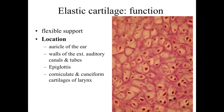Elastic cartilage is associated with more flexible support. The best example is the auricle of the ear — that outer portion. It has structure and a defined shape, but you can tweek it, twist it, and fold it over. It has the ability to bounce back. Elastic cartilage is found in the walls of the external auditory canals and tubes, in the upper glottis, and in the corniculate and cuneiform cartilages within the larynx.